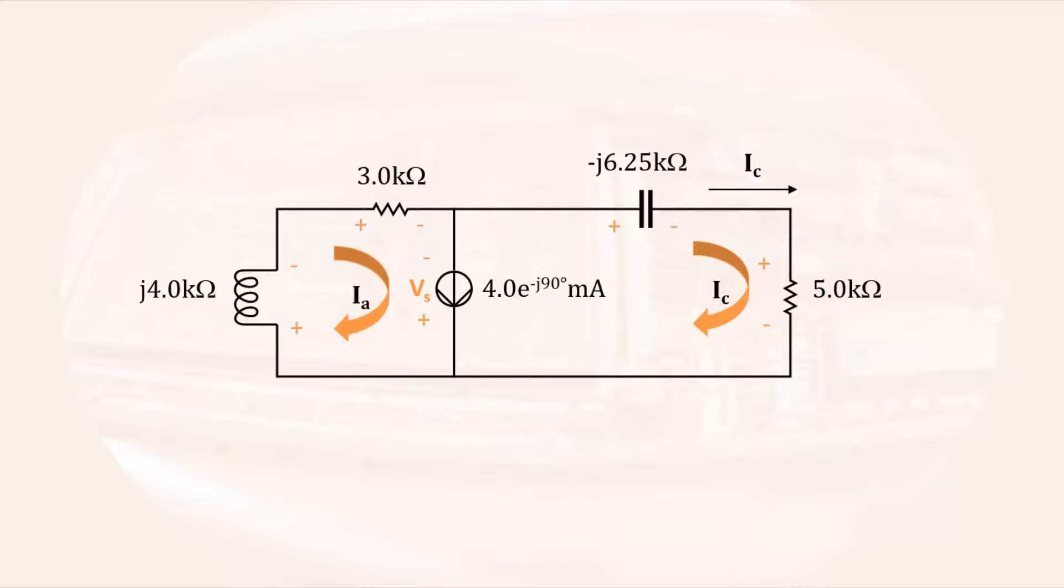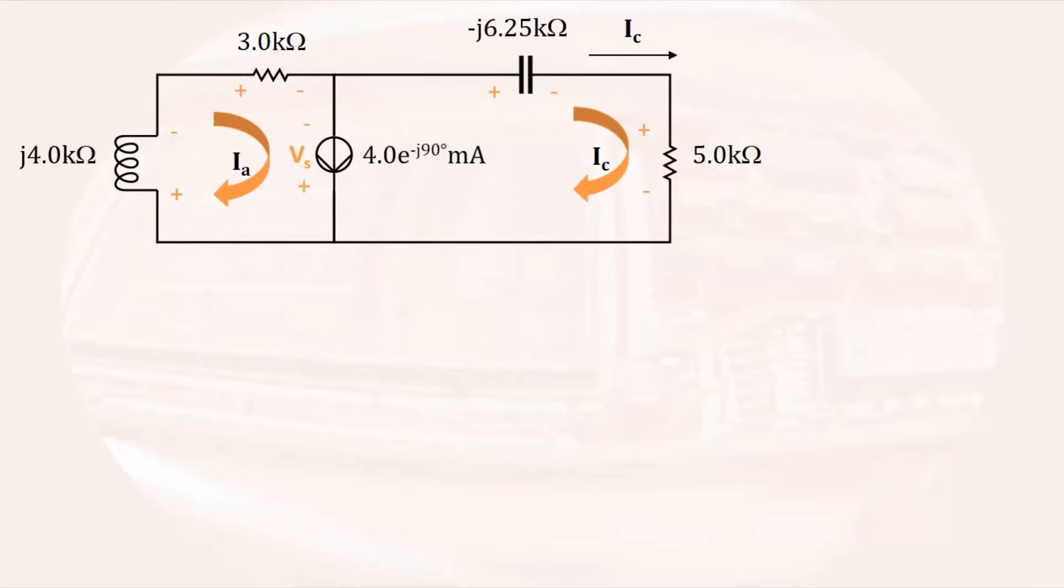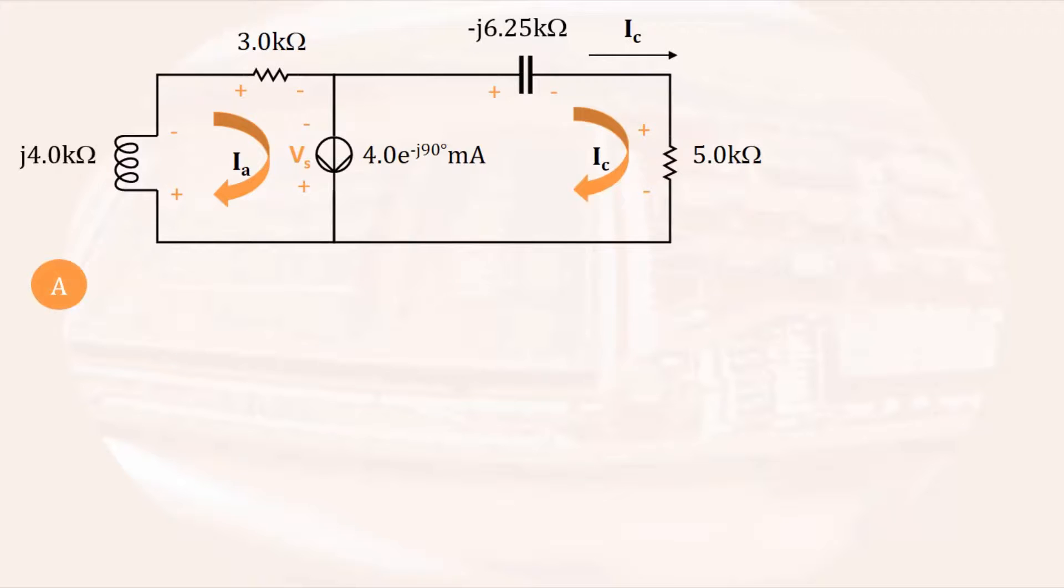Writing an equation for loop A beginning in the lower left-hand corner, there is a voltage drop across the inductor, so we get minus j 4 kilo ohms times Ia. There is a voltage drop across the 3 kilo ohm resistor, so we get minus 3 kilo ohms times Ia, followed by a voltage increase of Vs.